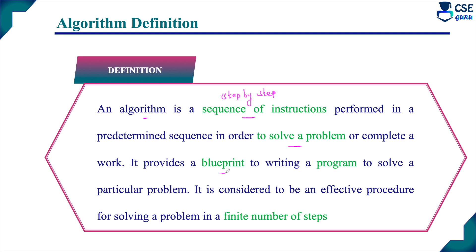An algorithm is a blueprint for writing a program to solve a particular problem. To solve any problem, we need to write programming code in any language — C, C++, or Java. Before writing that programming code, in order to understand the steps to solve the problem, an algorithm is required. It provides a blueprint for writing the programming code.